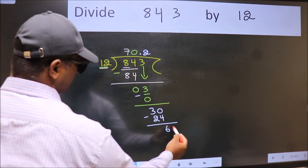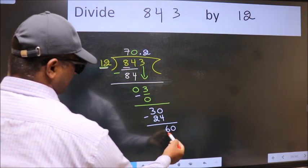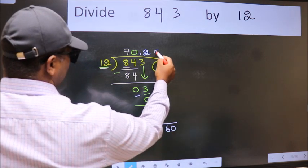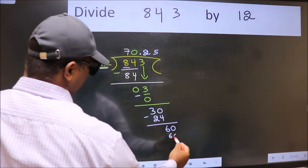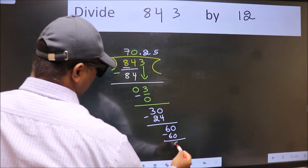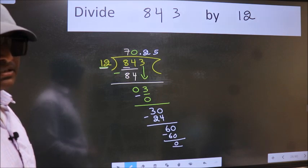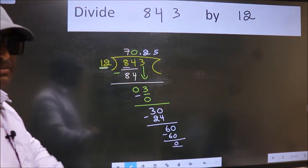We already have the decimal, so directly take 0, making it 60. When do we get 60 in the 12 table? 12 times 5 is 60. Now we subtract and get 0. So, did you understand where the mistake happens? You should not make that mistake.